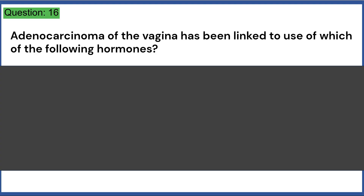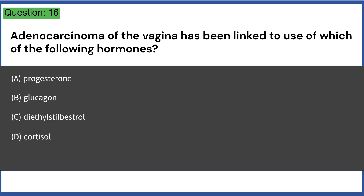Adenocarcinoma of the vagina has been linked to use of which of the following hormones? A. Progesterone, B. Glucagon, C. Diethylstilbestrol, D. Cortisol, E. Aldosterone. Answer: C.